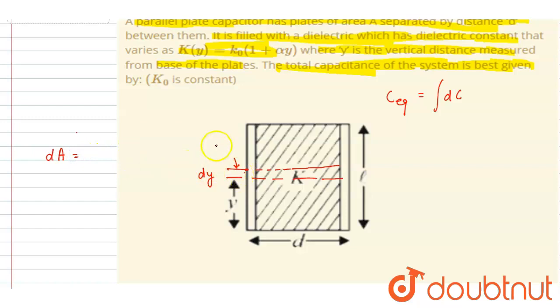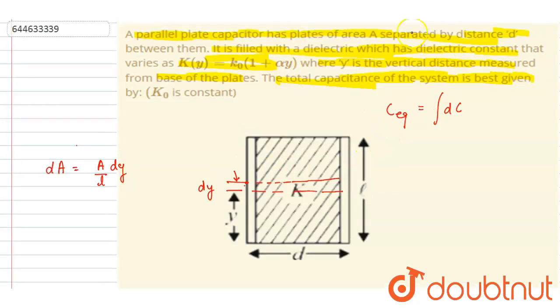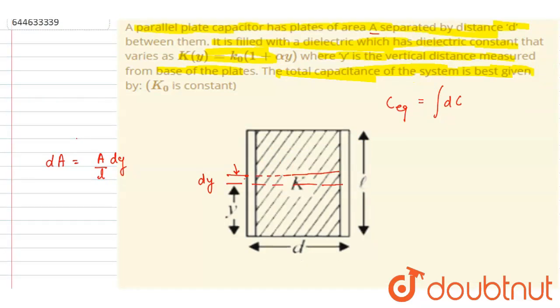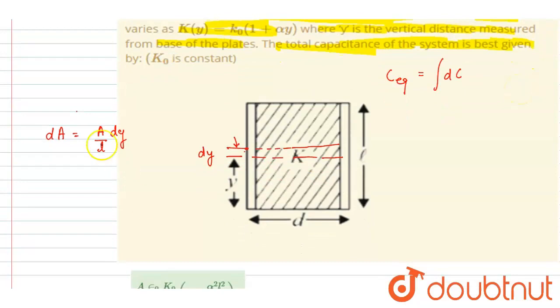this width times the length. Length will be A/l, so it will be A/l into dy. You can see this length is l and the total area is given, so total area by length will equal the width, and width into this small thickness will be the area. We got the